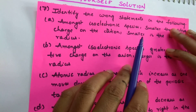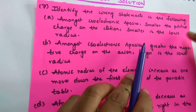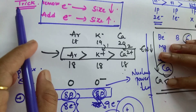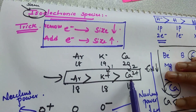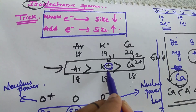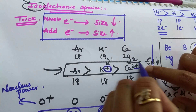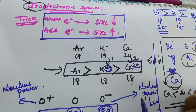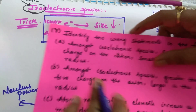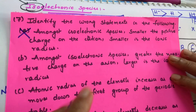Amongst isoelectronic species, smaller the positive charge on the cation, smaller is the ionic radius. See what I taught you — in case of isoelectronic species, if 2 cations are there and smaller the positive charge means smaller is the size, or more is the size? More is the positive charge, then smaller will be the size, because more electrons you remove, size decreases. So this statement is the incorrect statement — the first statement is the only incorrect one.